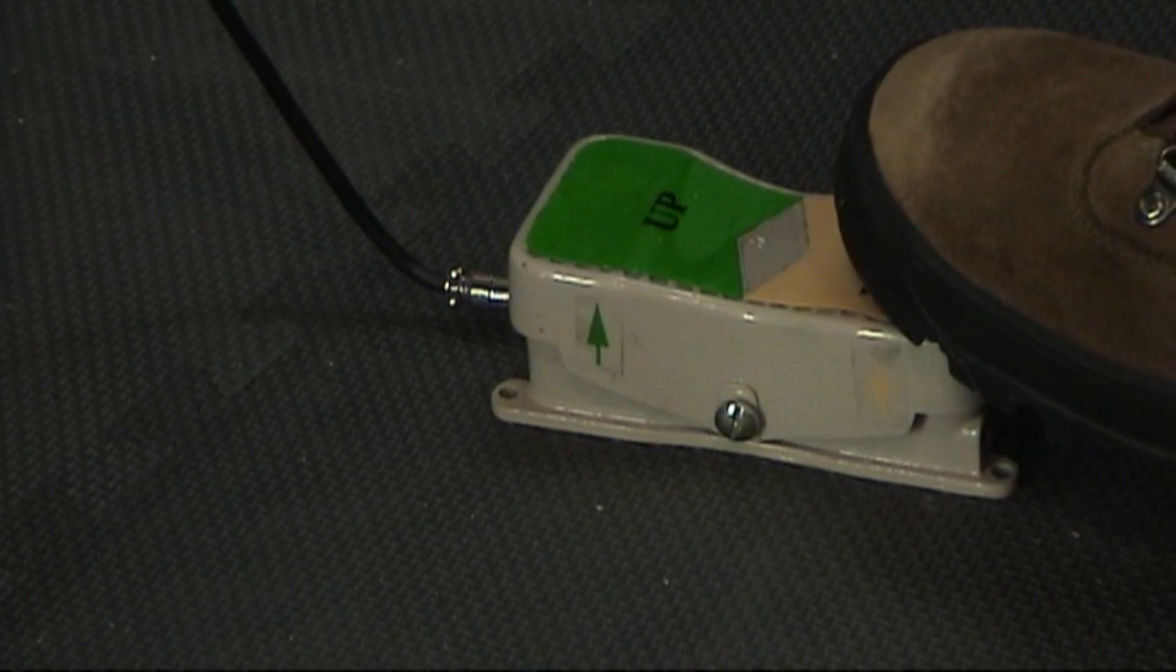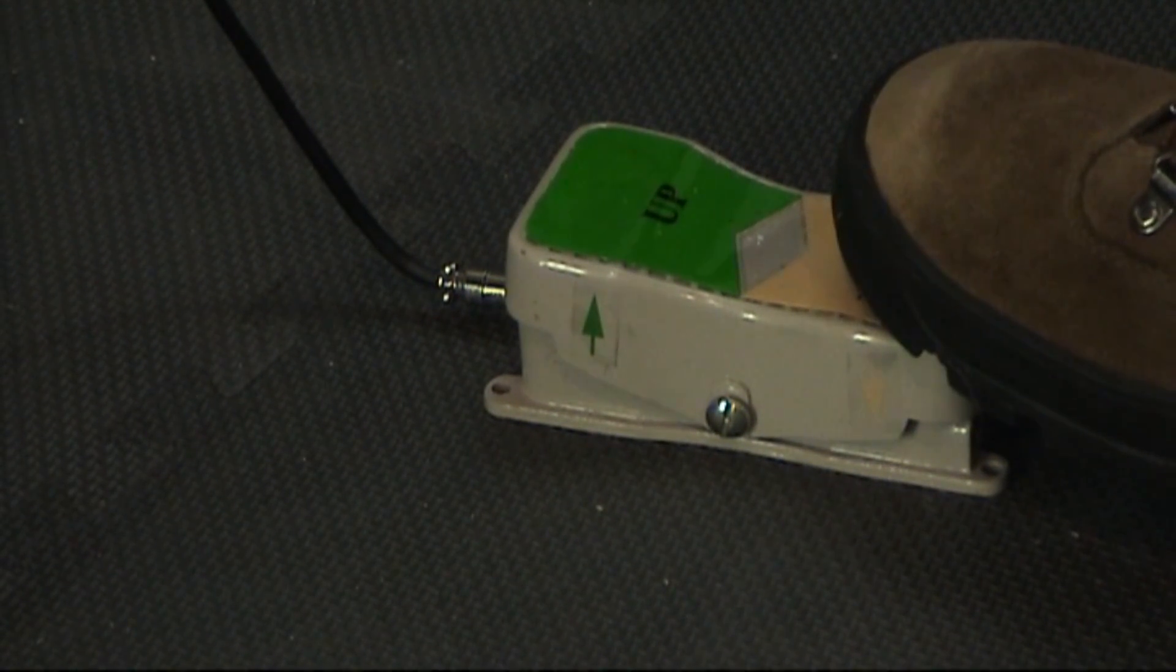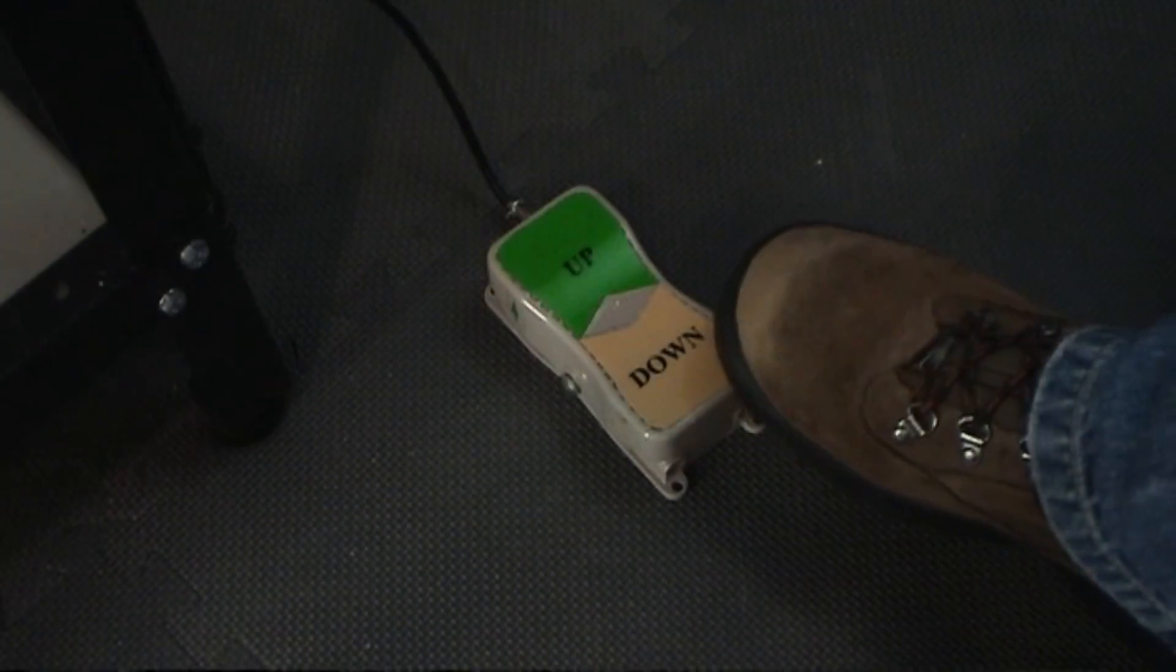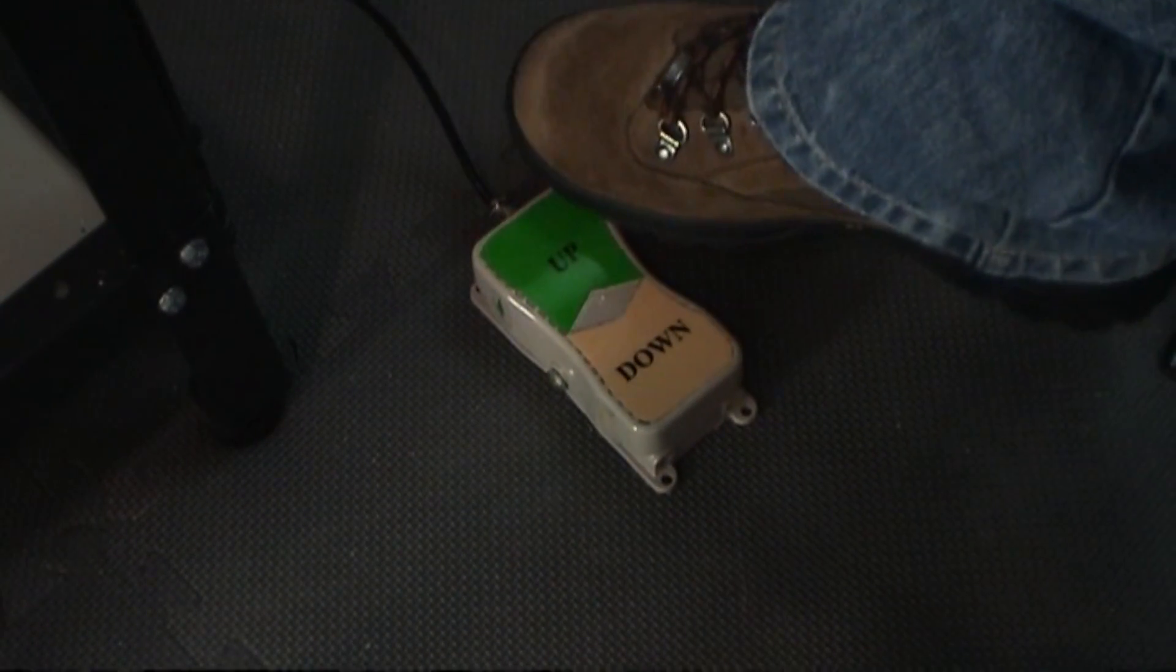The PowerLift can be activated using the sturdy metal foot switch. It's bi-directional. Push on the front part of the pedal to have the lift go up and the back part of the pedal to bring the lift down.